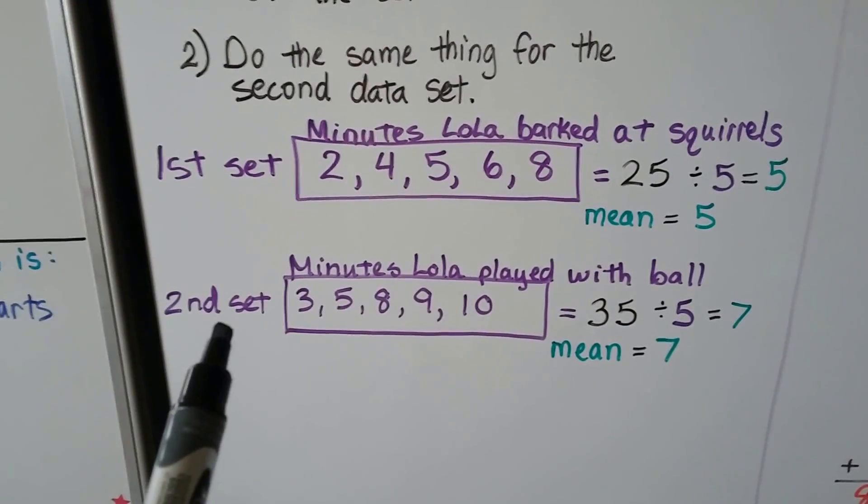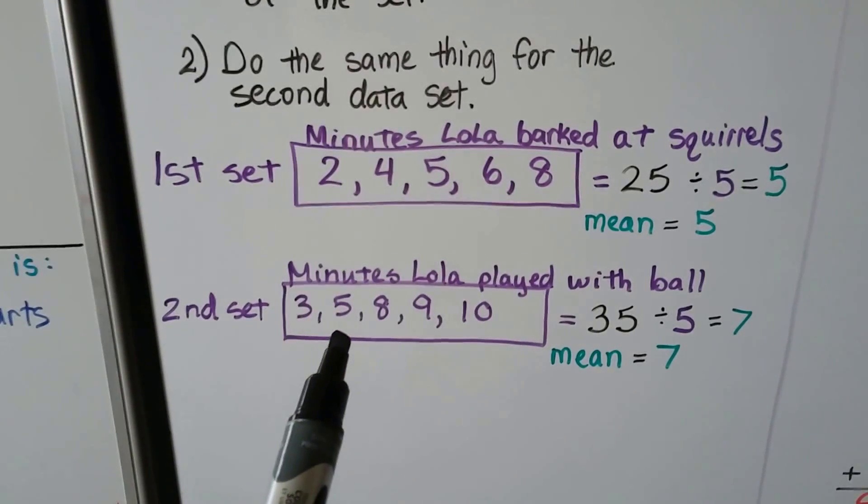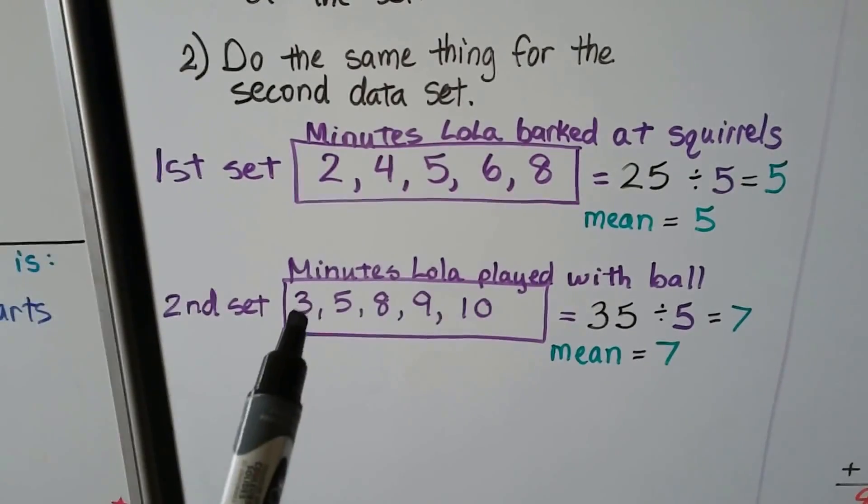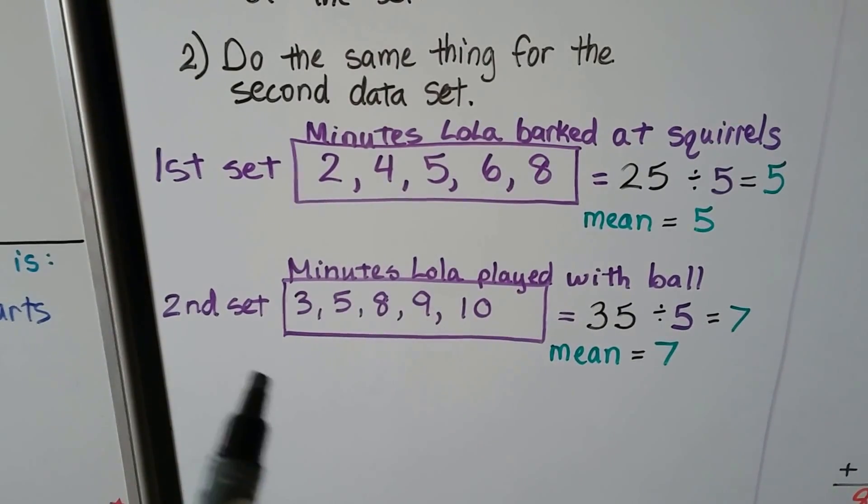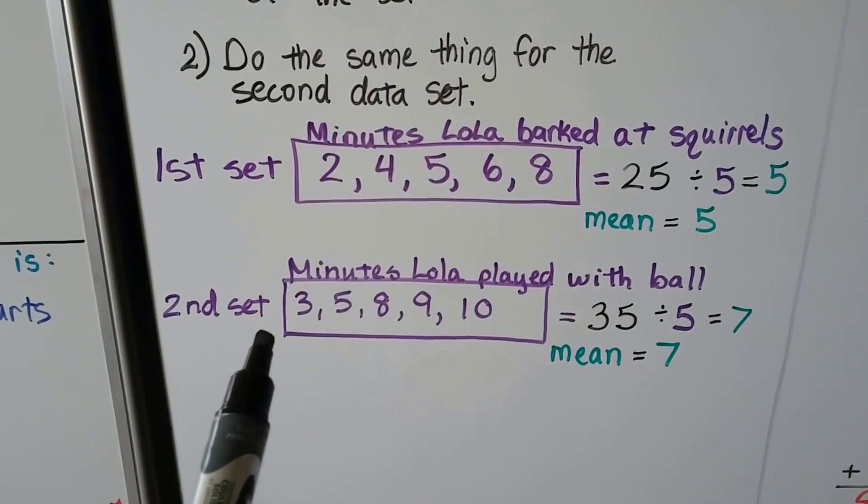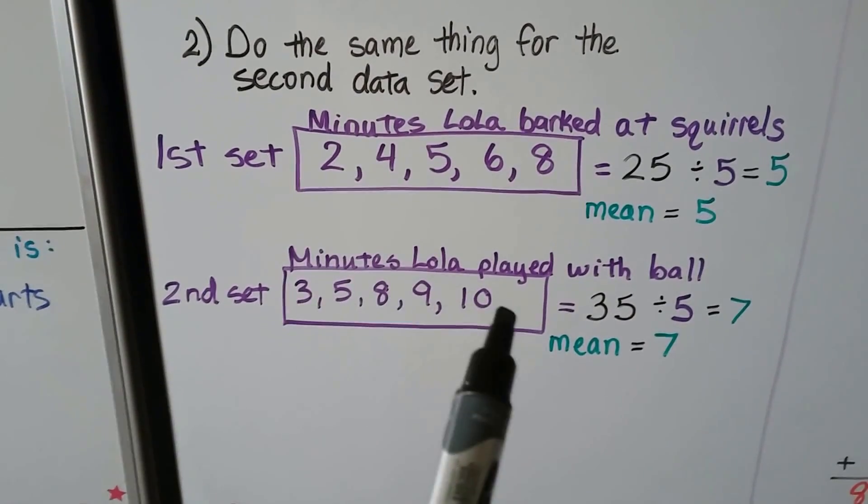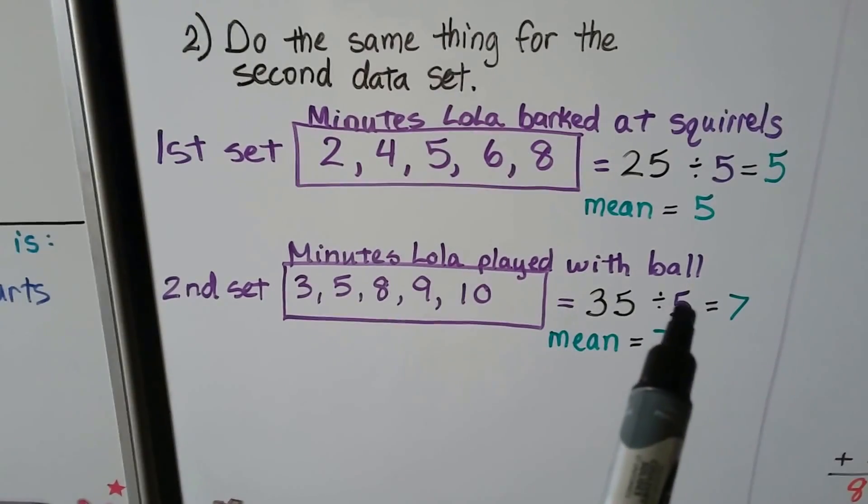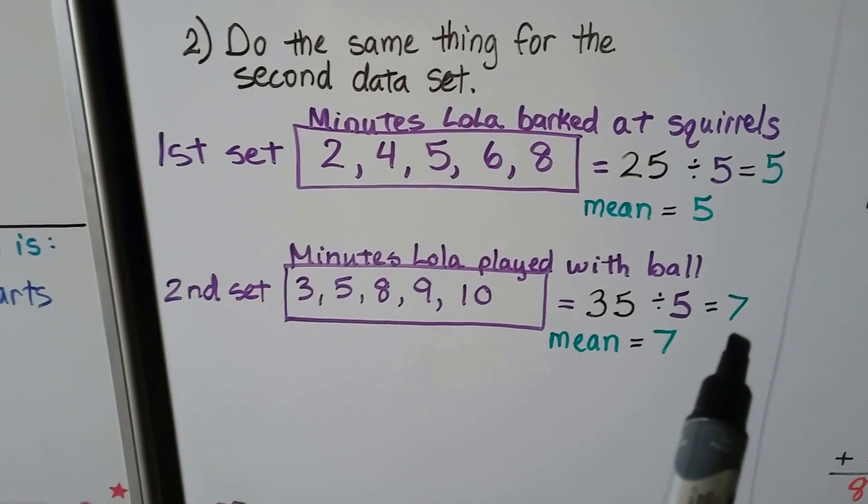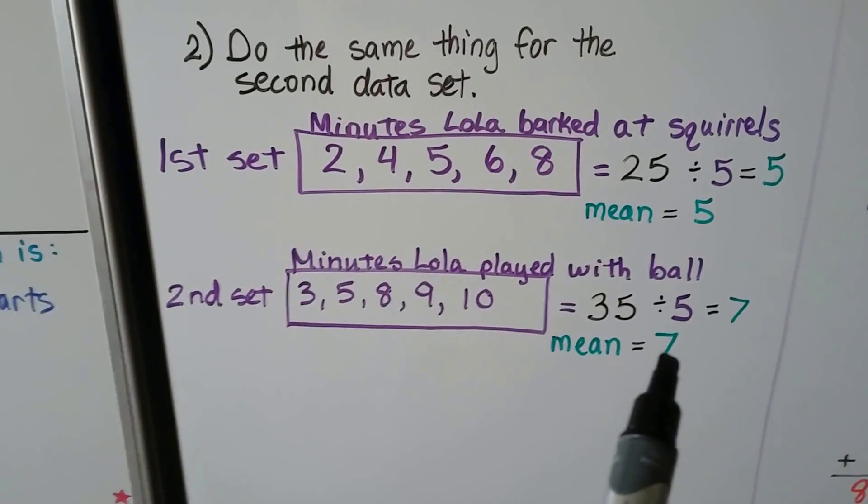Then I took a second set of information, a data set, of how many minutes Lola played with a ball. She played for 3 minutes, 5 minutes, 8 minutes, 9 minutes, 10 minutes. I wanted to find the average of how long she played with the ball, so I totaled up these as addends, and it equals 35. Because I have 5 addends, I divided it by 5, and the average amount of time Lola plays with a ball is 7 minutes. So this mean is 7.